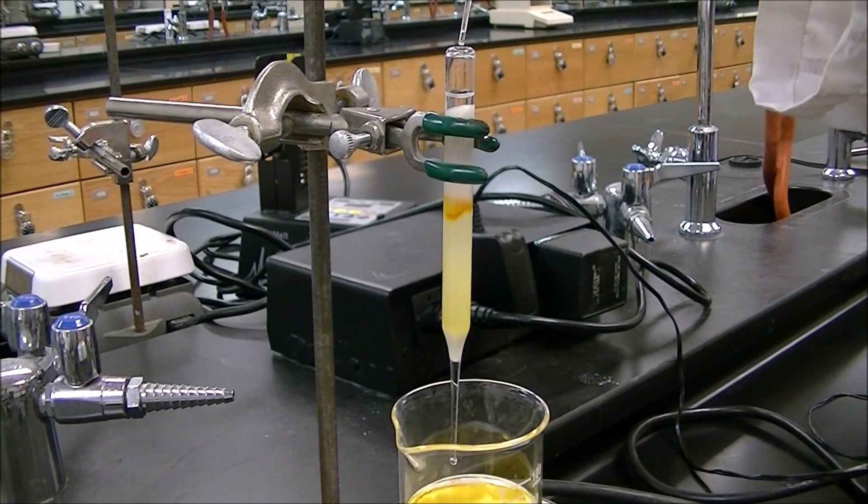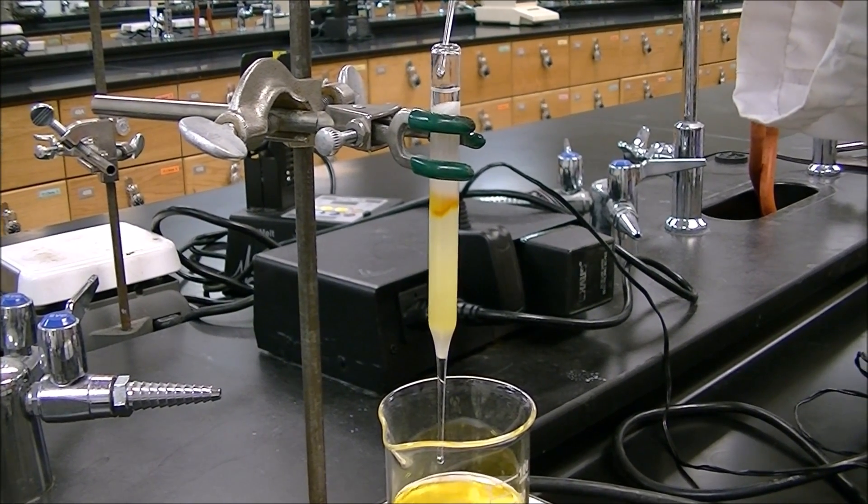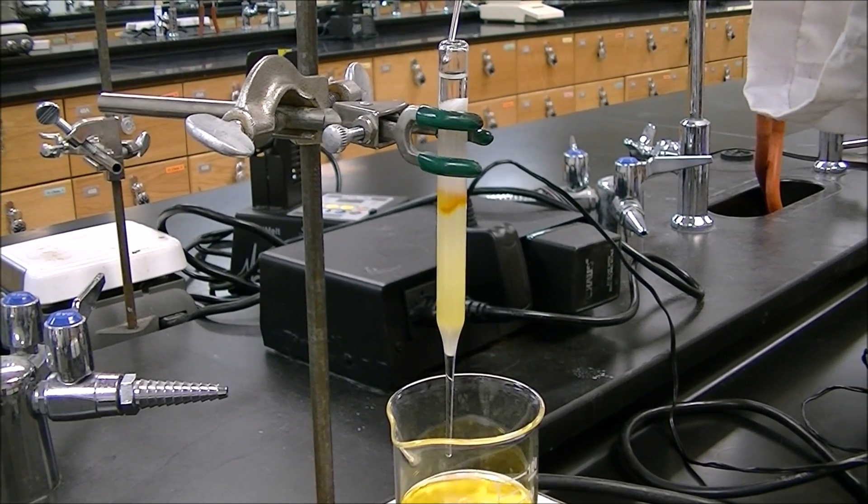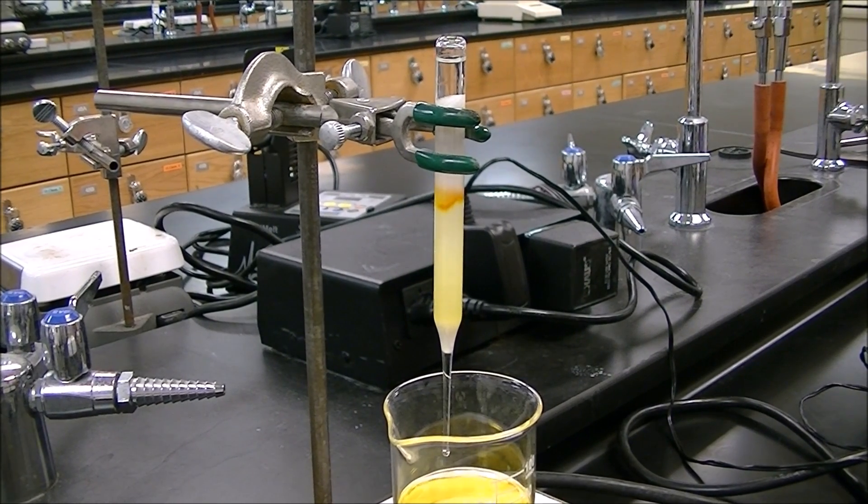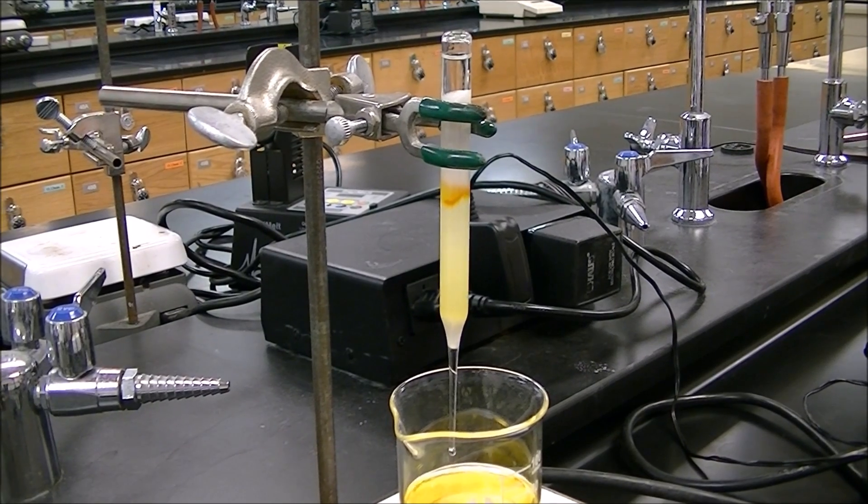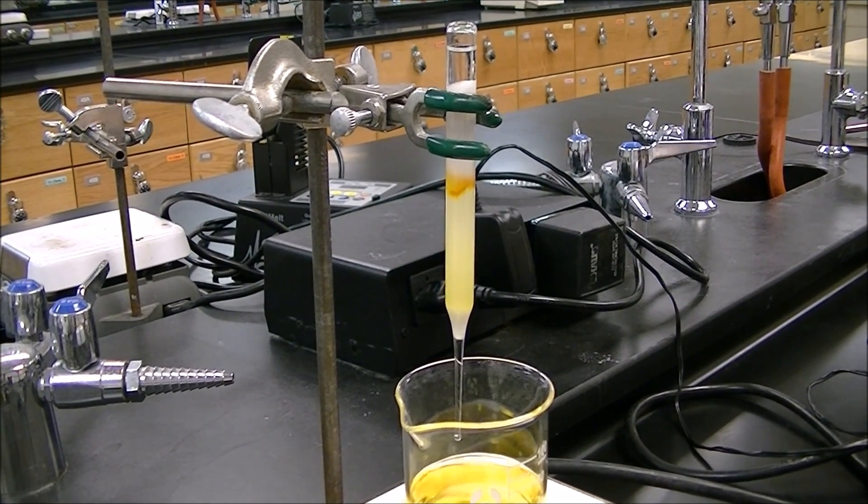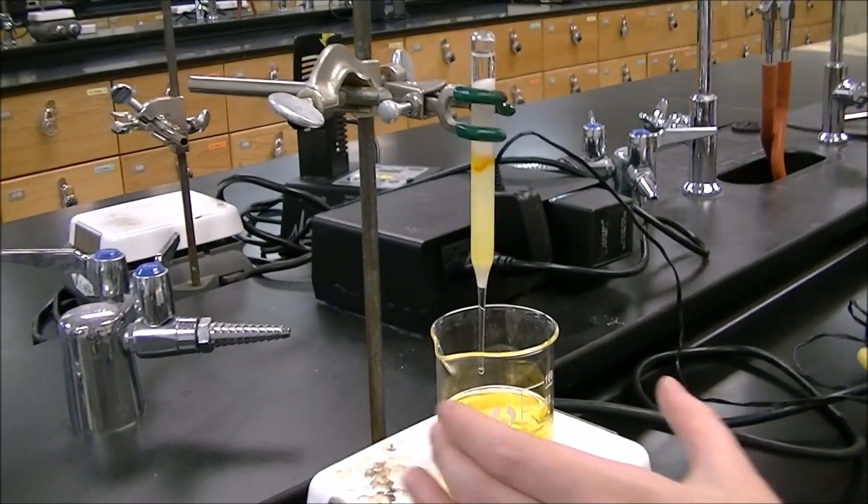We've got our cis isomer about halfway down the column and you can see that the solution below it is very light. And so we're mostly getting cis isomer out of the column now. So we're going to switch from our second beaker to our third one.